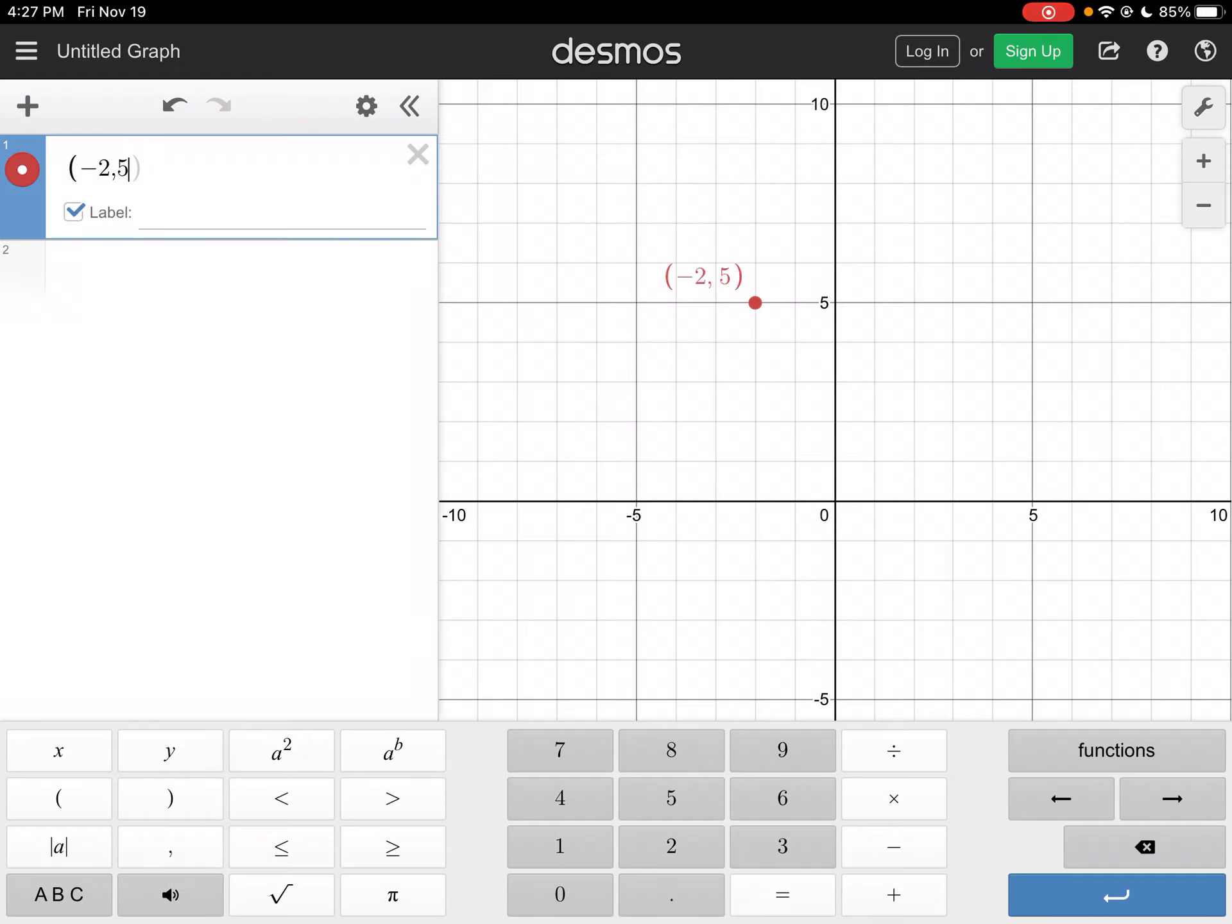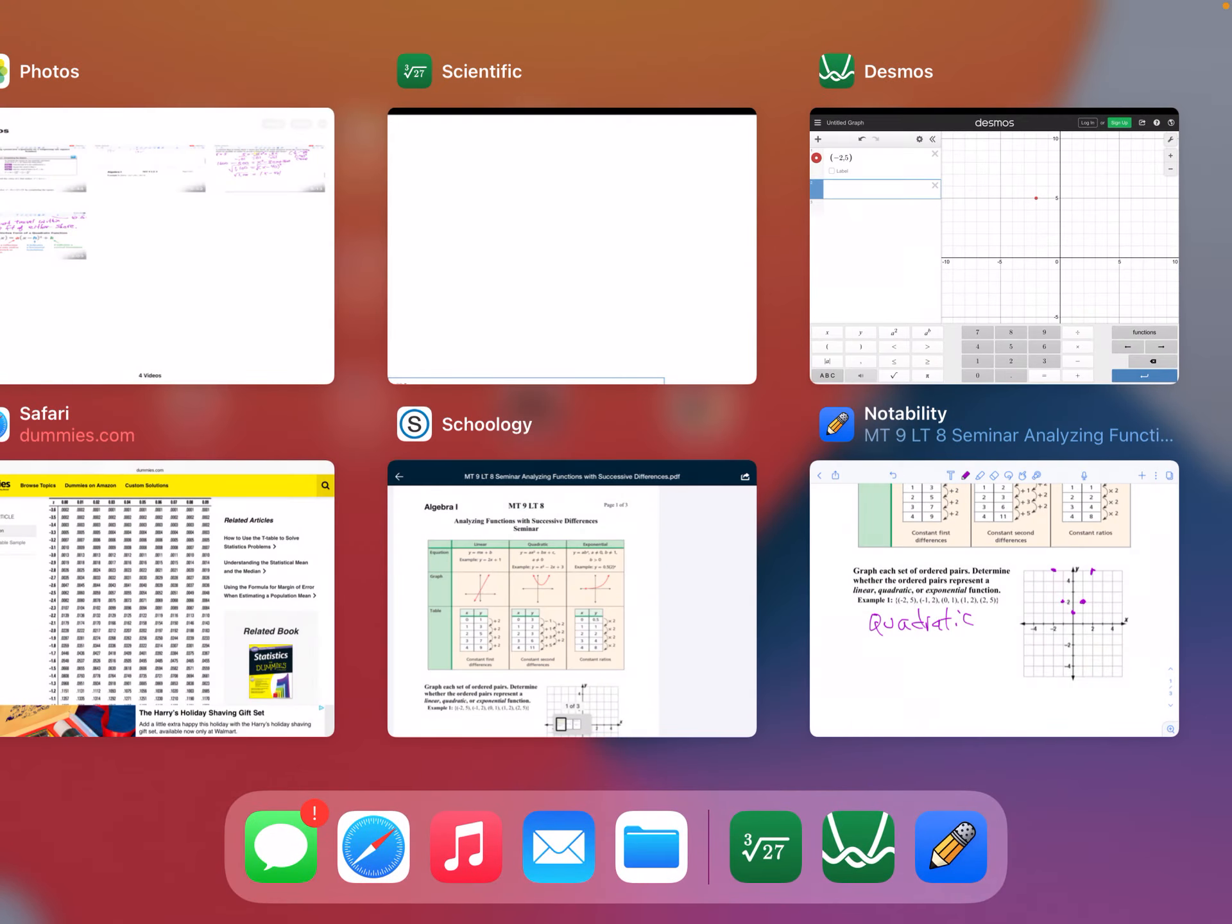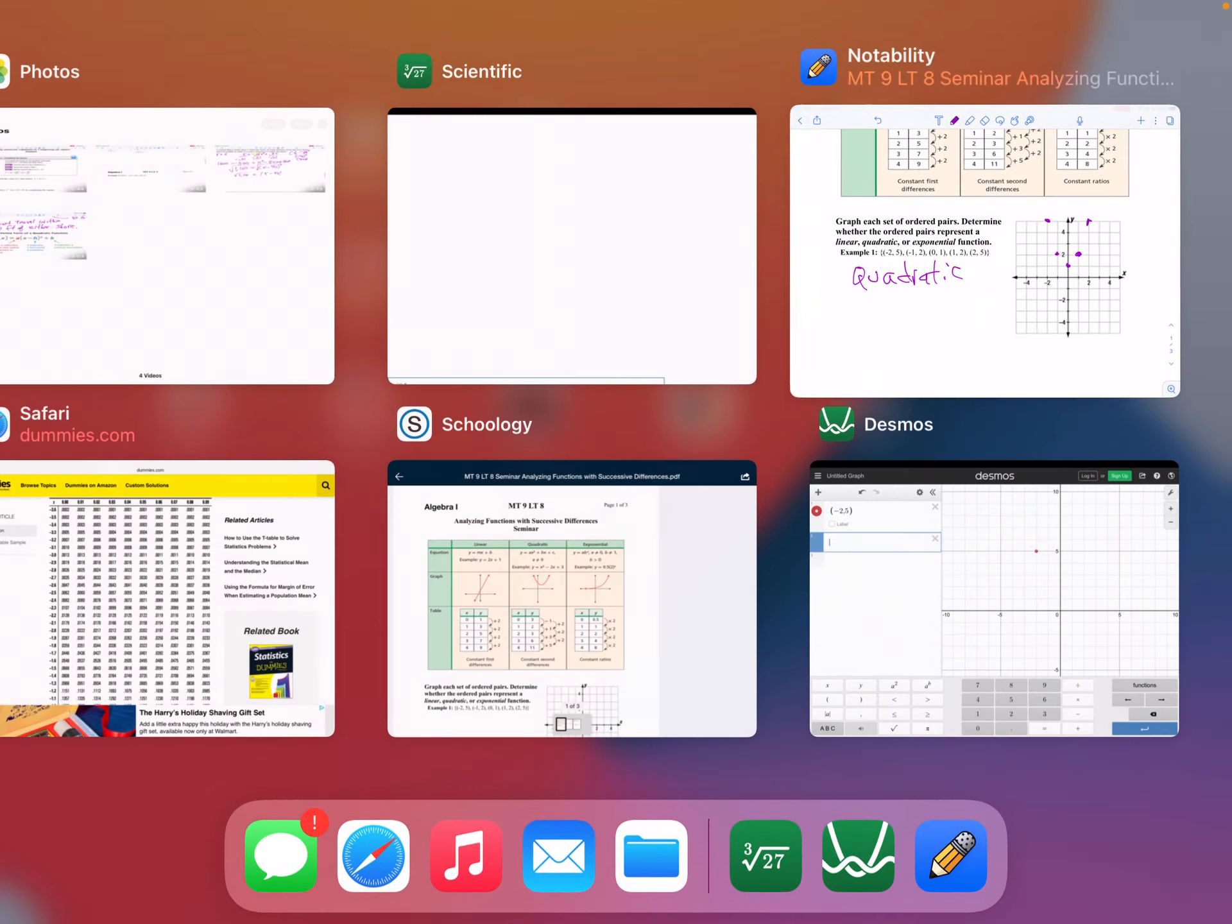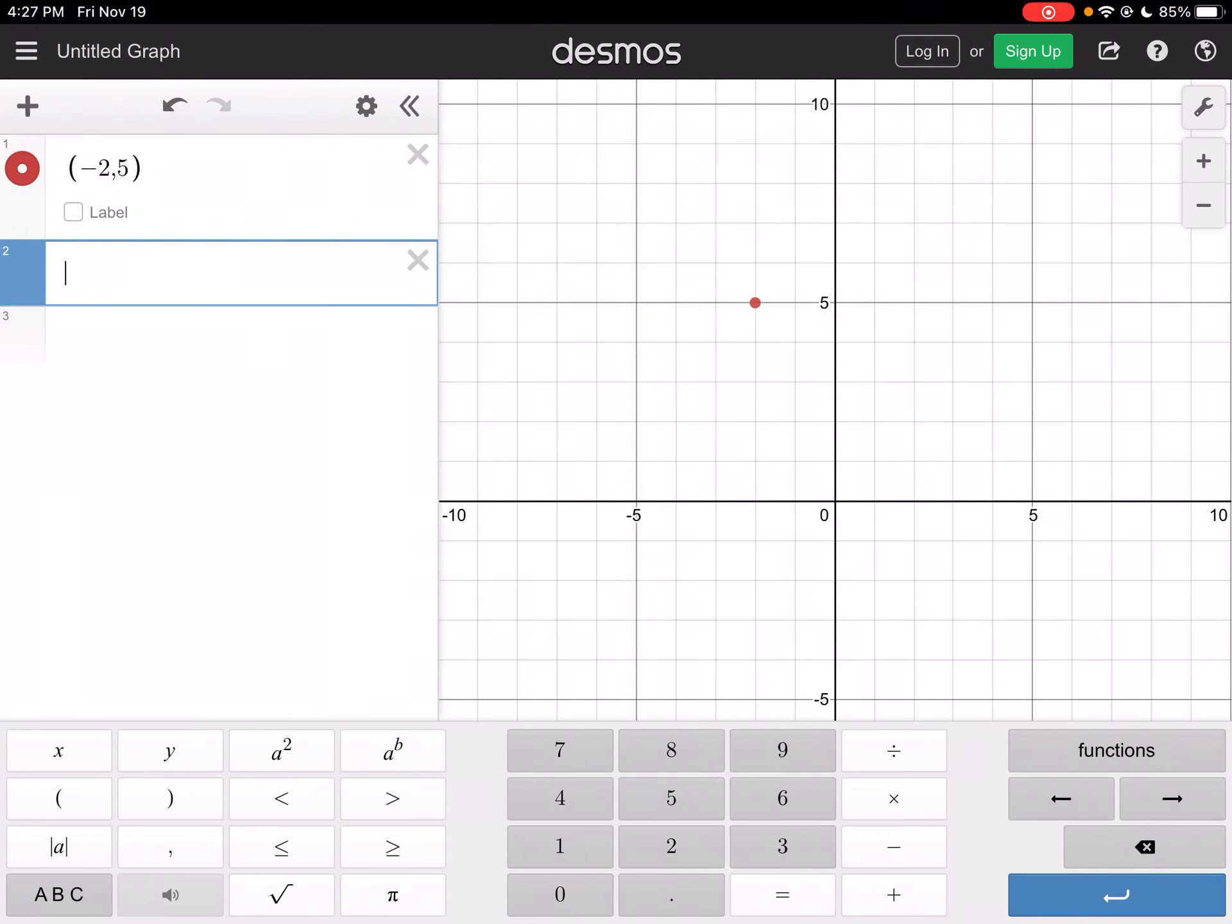There's my first point. I could put a label if I wanted to, but I'm not going to. Then my second point is going to be negative 1 and 2. So then we're going to graph negative 1 and 2.